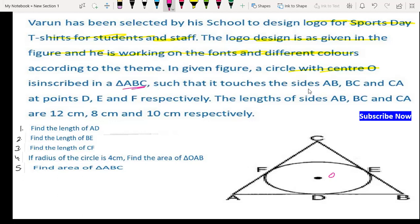The circle touches the sides AB, BC and CA at points D, E and F respectively. The lengths of sides AB, BC and CA are 12 cm, 8 cm and 10 cm respectively. This is the figure.